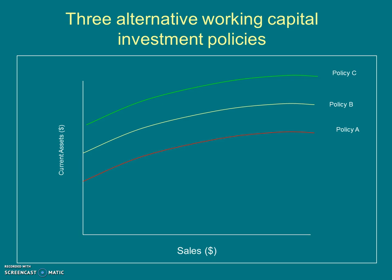There are three policies related to working capital investment. The green line represents Policy C, which stands for conservative policy. As the name suggests, conservative means the firm is not very ready to take risk — they would like to be on the safer side. Conservative policy says these firms always invest a much higher amount in working capital than what is actually required.